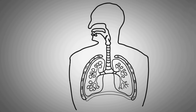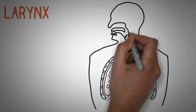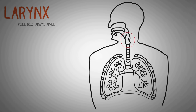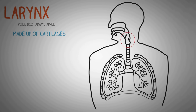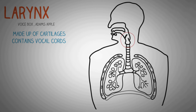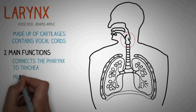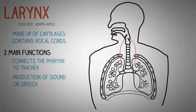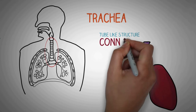The next important structure in the respiratory tract is the larynx, also known as the voice box as well as the Adam's apple. The larynx is made up of many cartilages and contains the vocal cords. The main functions of the larynx in the human respiratory system are: it connects the pharynx to the trachea, and it is responsible for the production of sound or speech.